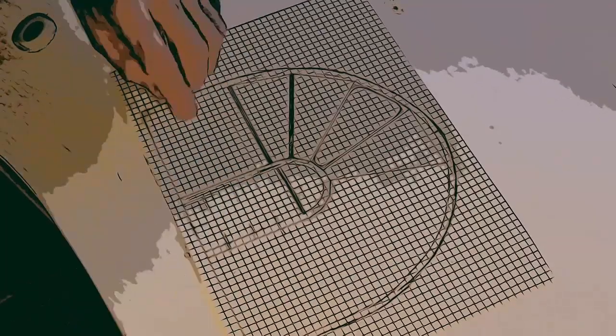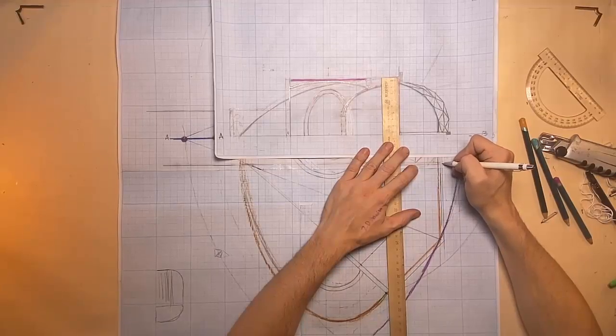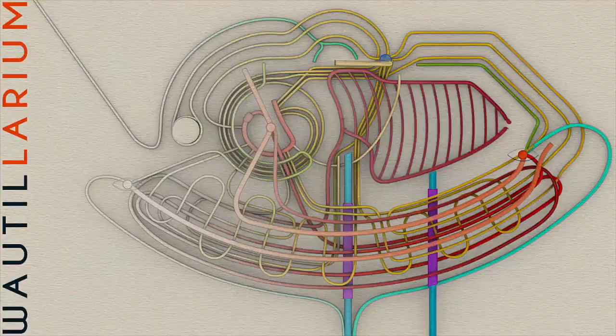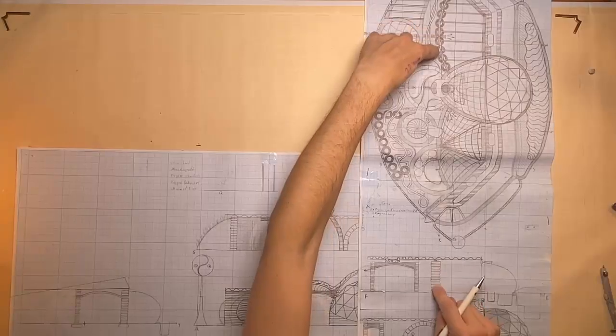Once we have the floor plan we will master the drawing of section which is side view, front view, elevation and all the necessary slices through the home in various directions so you can see what the home looks like from east to west and north to south.